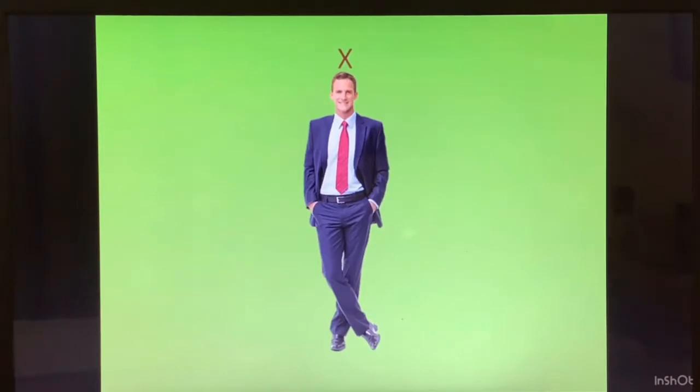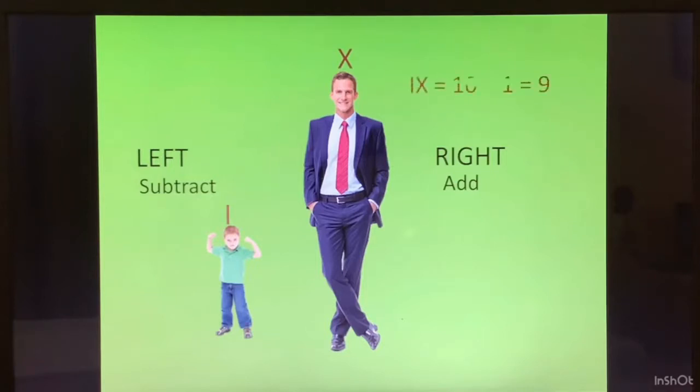Now I have given a small depiction which will help you to understand the addition and subtraction rule. This gentleman is Roman numeral X. This is the left and this is the right. Whatever comes to his left, we will subtract. Whatever comes to his right, we will add. The young boy has the value I. Now, the Roman numeral formed is IX. The young boy comes and stands left of him. So we subtract 1 from 10: 10 minus 1 is equal to 9. So the Roman numeral becomes IX which is 9.